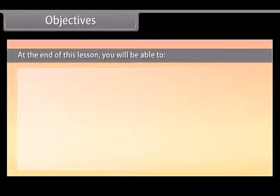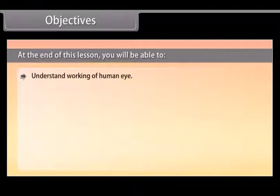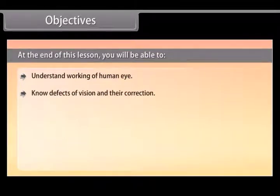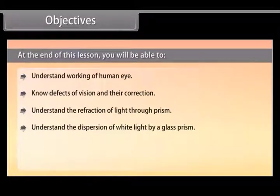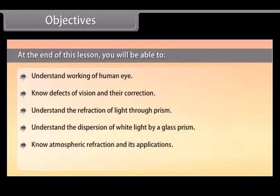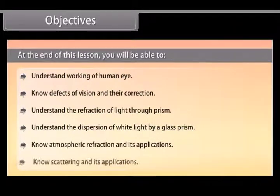Objectives: At the end of this lesson, you'll be able to understand the working of the human eye and defects of vision, understand the refraction of light through a prism, understand the dispersion of white light by a glass prism, know atmospheric refraction and its applications, and know scattering and its applications.